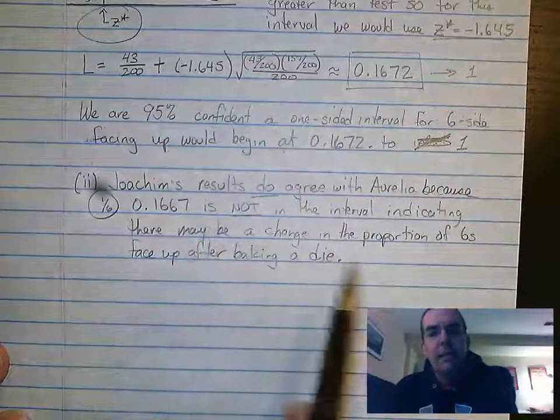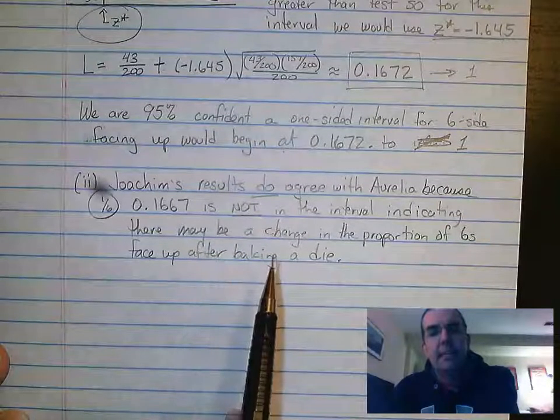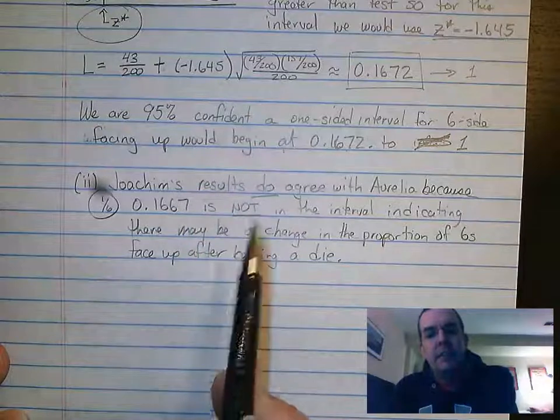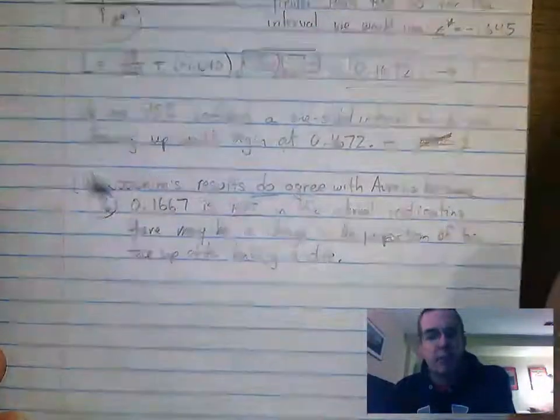So there may be a change in the proportions of sixes being faced up after baking a die. So what we've proven is that with this one-sided interval, one-sided interval would give us a significant result.